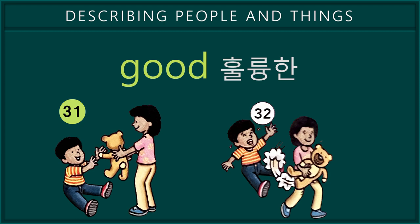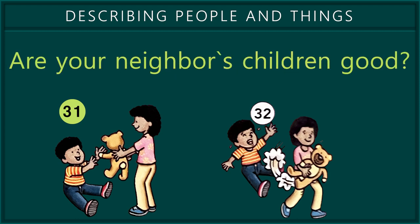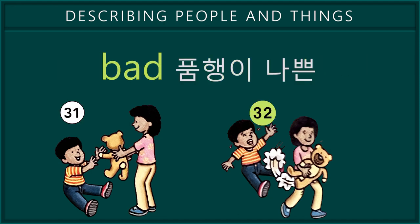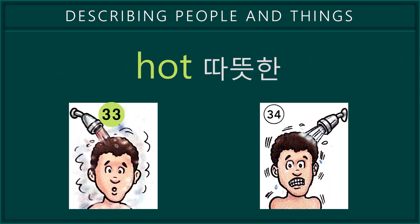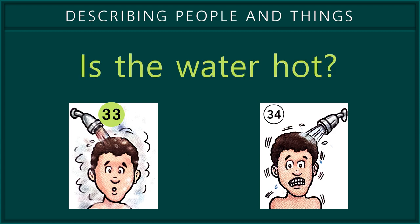31. Good. Are your neighbor's children good? 32. Bad. Are your neighbor's children bad? 33. Hot. Is the water hot?